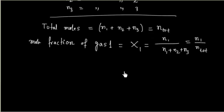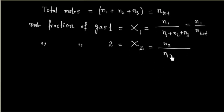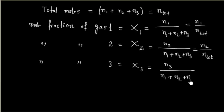Similarly we can write mole fraction of gas 2, denoted X2, which equals N2 divided by total moles N1 plus N2 plus N3, so N2 divided by N_total. And we can write mole fraction of component 3 as N3 divided by N1 plus N2 plus N3, which is N3 divided by N_total.